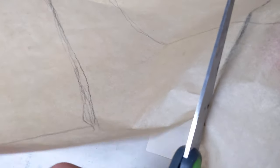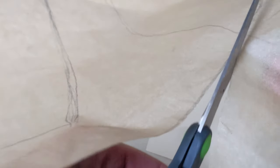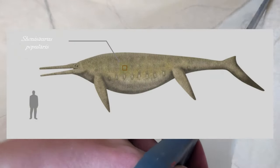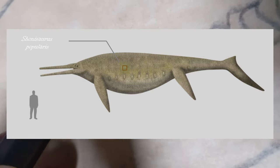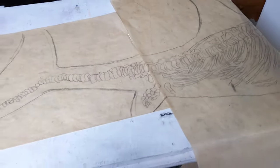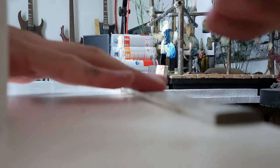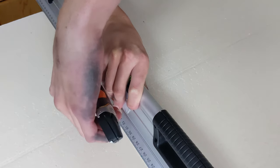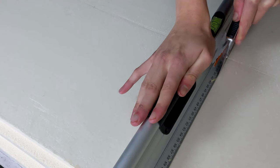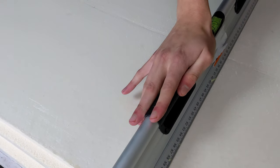Jedenfalls war der Stenopterigius einer der kleineren Ichthyosaurier. Zum Vergleich: der Shonisaurus popularis, der auch zu den Ichthyosauriern gehört, ist bis zu 21 Meter geworden, während der Stenopterigius nur 3 bis 4 Meter lang wurde. Mittlerweile habe ich die Skizze abgeschlossen und schneide nun Hartschaumplatten zu, um sie zu einer 2 Meter mal 70 Zentimeter großen Hartschaumplatte zu vereinigen, auf der ich dann die Skizze aufbringen kann. Das bringt uns genug Zeit für weitere Ichthyosaurier-Fakten.